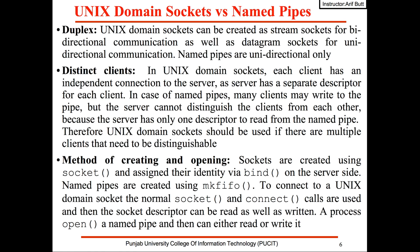The second difference is that in Unix domain sockets, each client has an independent connection to the server — the server has a separate descriptor for each client. On the contrary, in the case of named pipes, many clients may write to the pipe but the server cannot distinguish the clients from each other, as the server has only one descriptor to read from the named pipe.